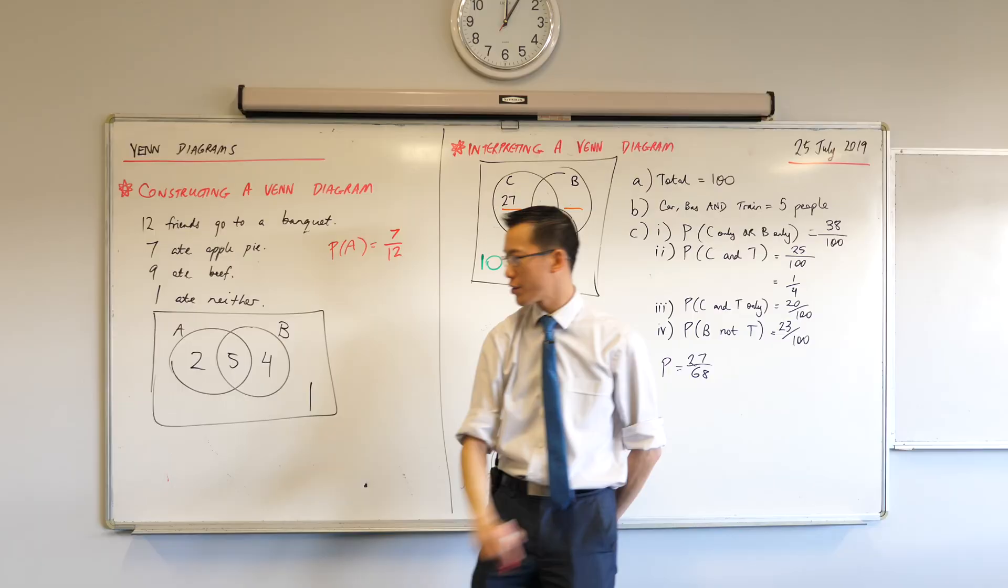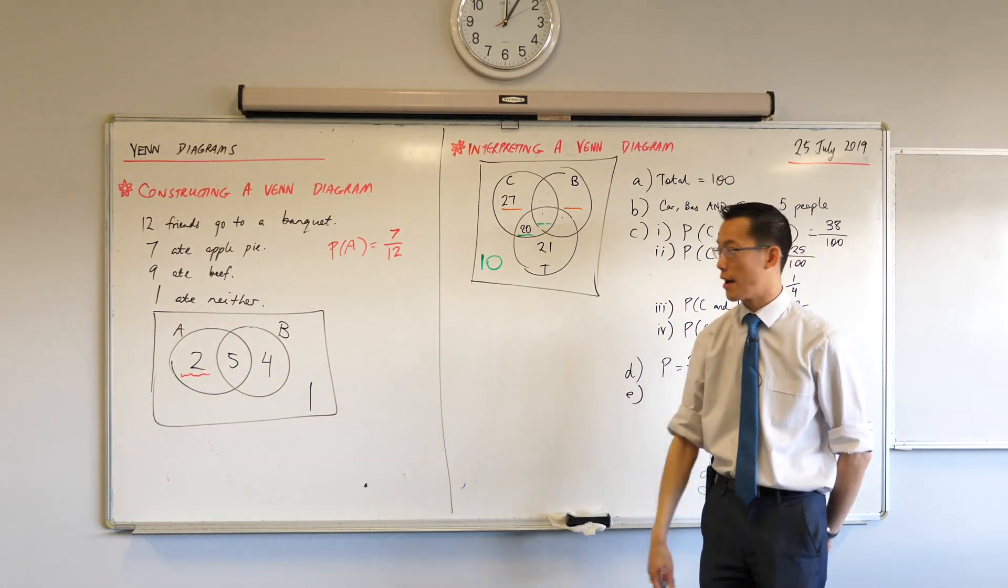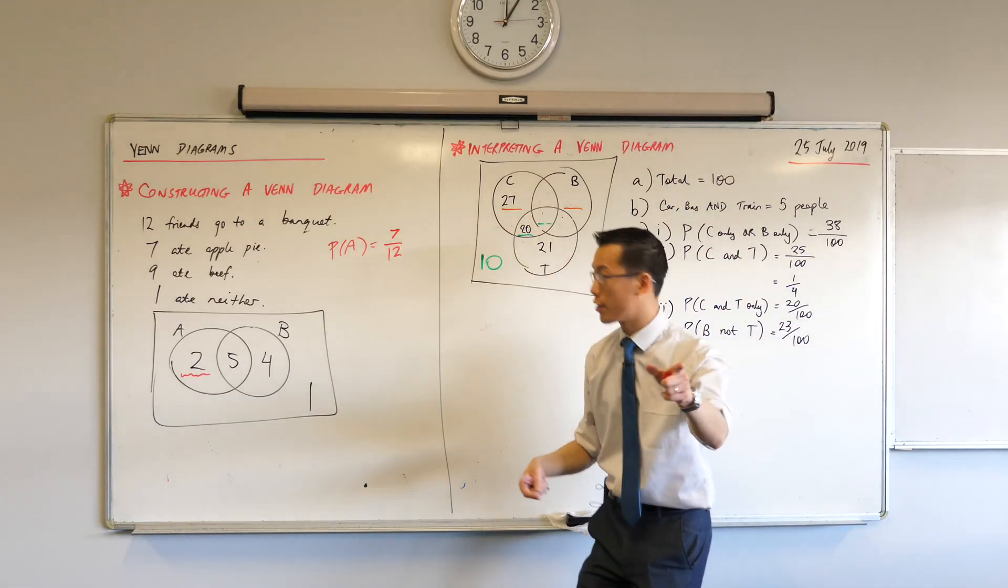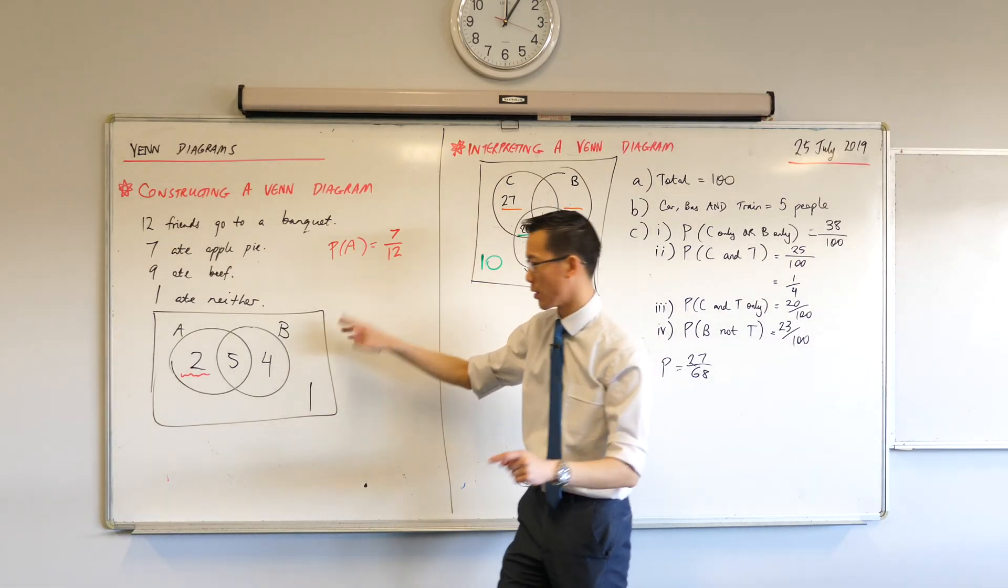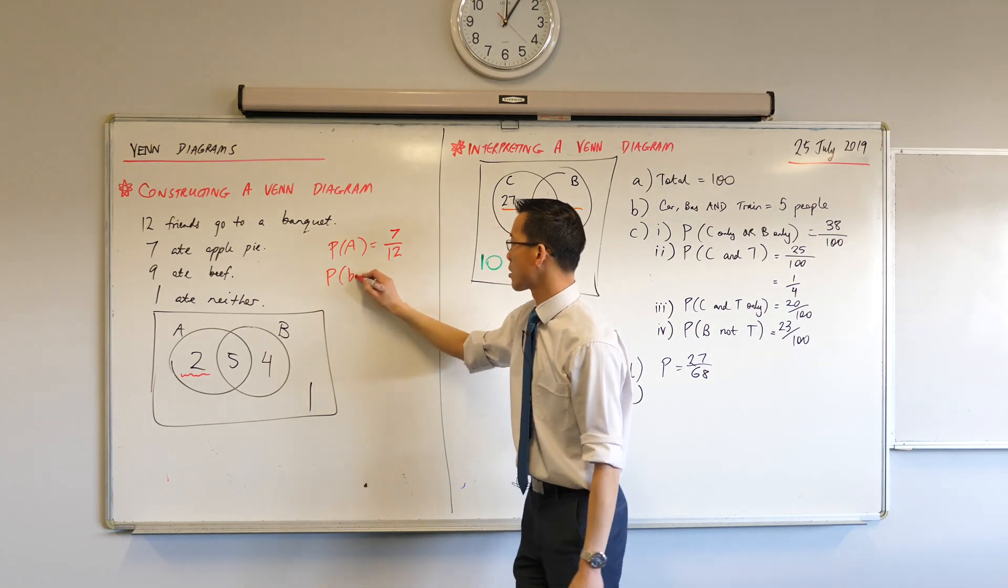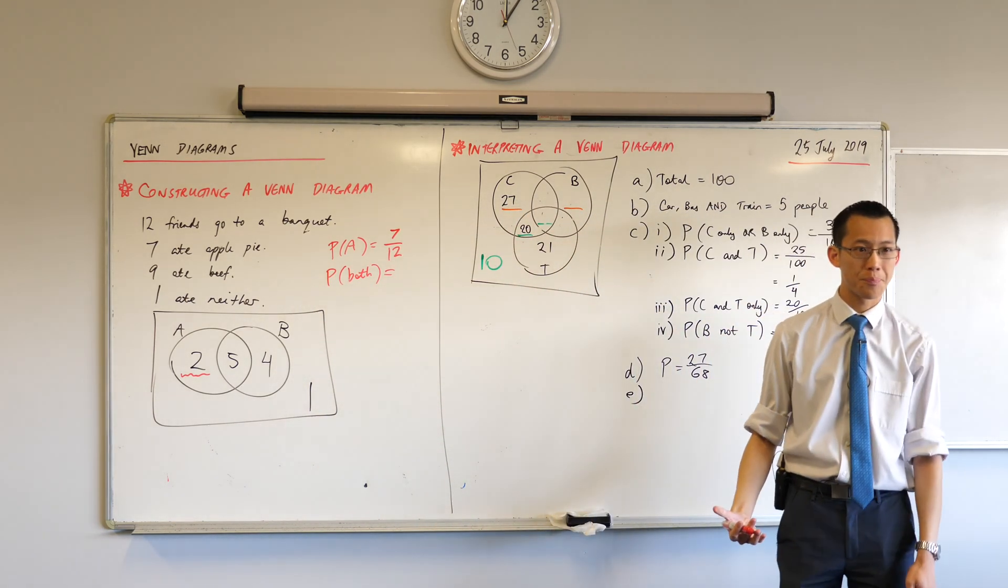So I would say that's 7 out of 12. If I were interested in just this group. Thanks, girls. Thank you. If I were interested in the two that parents were talking about, how would I have to rephrase the question? Apple pie only. Very good. I have to say probability of apple pie, and then the word only is what tells you I'm really looking at part of the circle. What if I ask you what's the probability of someone eating both? Which part of the circle is that? 5. It's the 5, right?